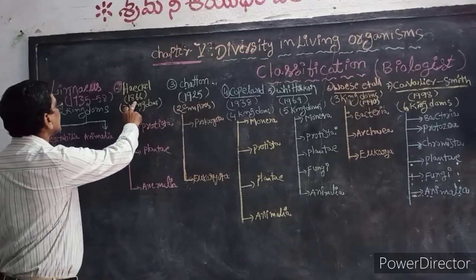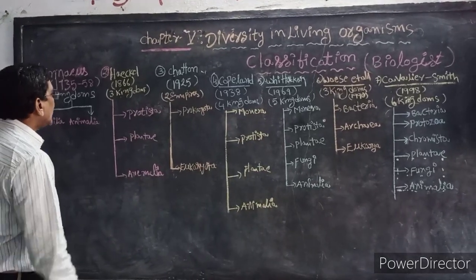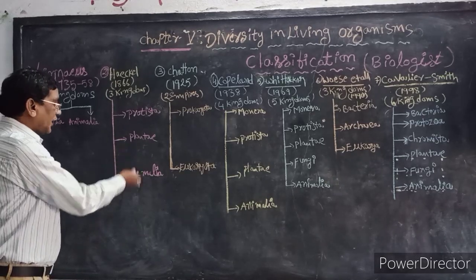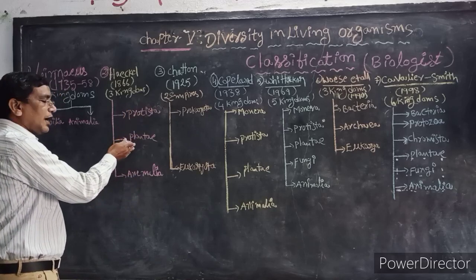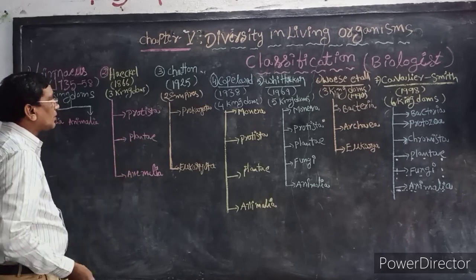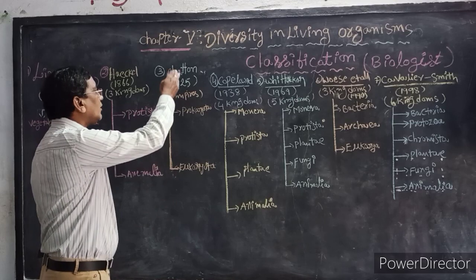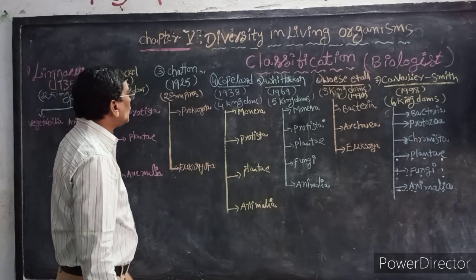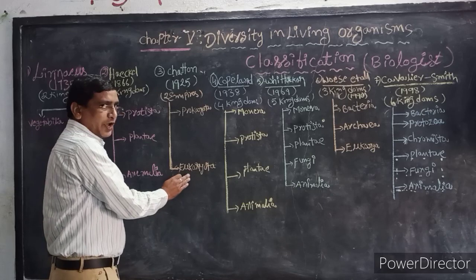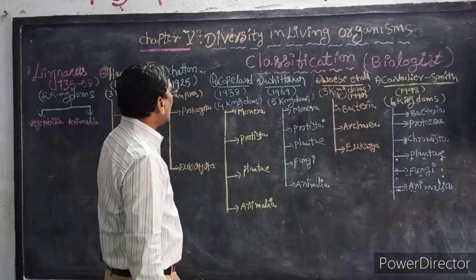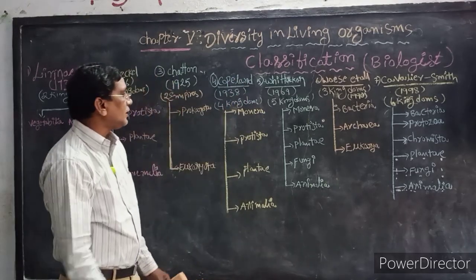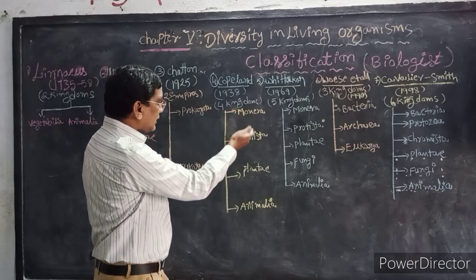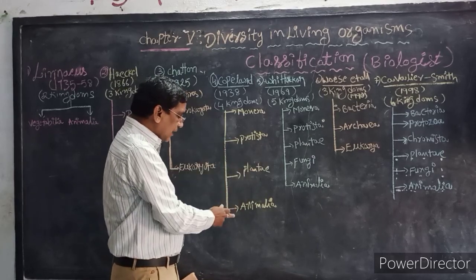In 1866, the scientist Haeckel classified all plants, animals, and organisms into three kingdoms: Protista, Plantae, and Animalia. Then another scientist, Chatton, in 1925, classified living organisms into two empires: Prokaryotes and Eukaryotes. Then Copeland, in 1938, classified organisms into four kingdoms: Monera, Protista, Plantae, and Animalia.